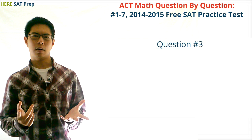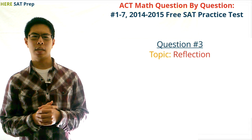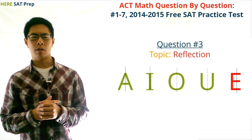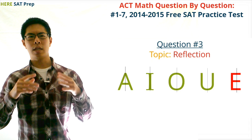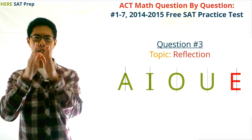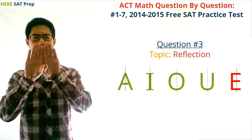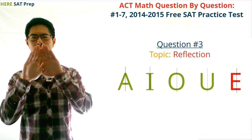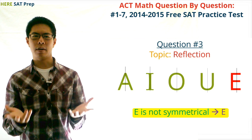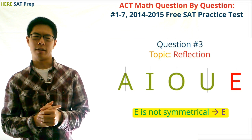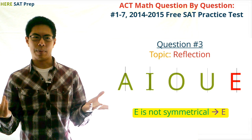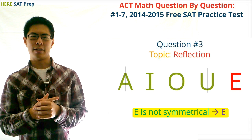Question number three. The topic of this question is reflection. For this question we simply need to see that for all of the choices except the letter E, if you fold the letter in half down the middle vertically, the left and the right sides will be mirror images of one another. So our answer is E, which just happens to be the letter E.